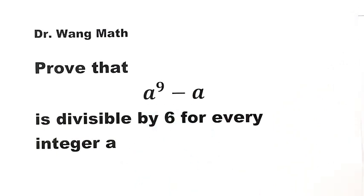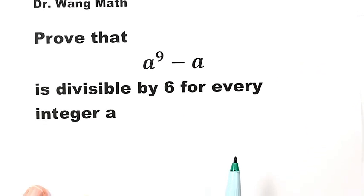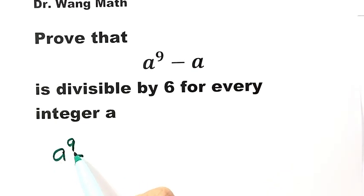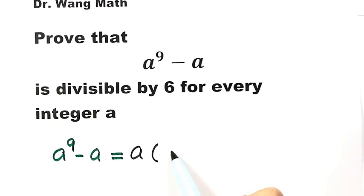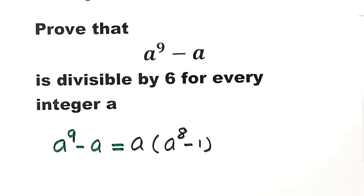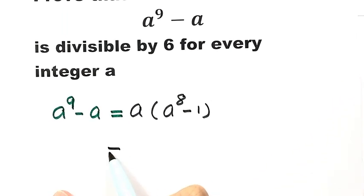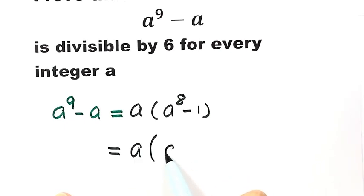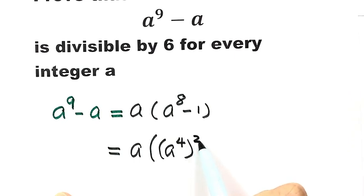For a to the power of 9 minus a, first note that it can be factored. Let's take out the common factor a, so the inside is a to the eighth power minus 1. Next, we can rewrite this term as a to the fourth power, squared, then minus 1.